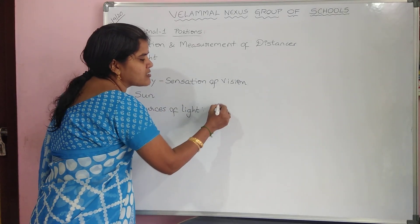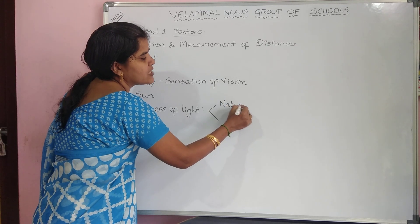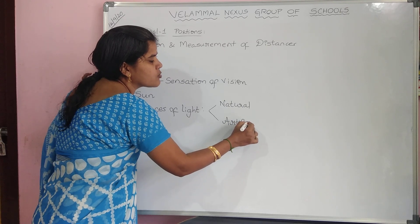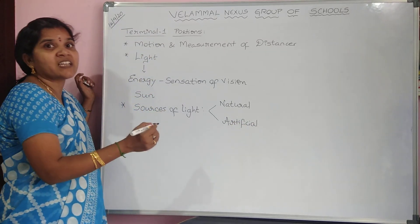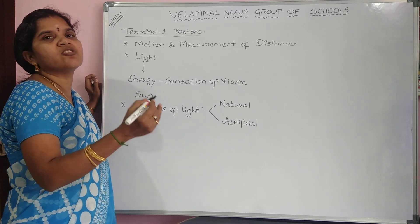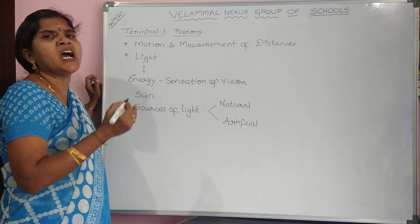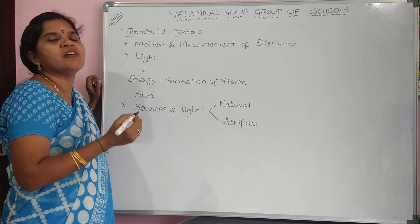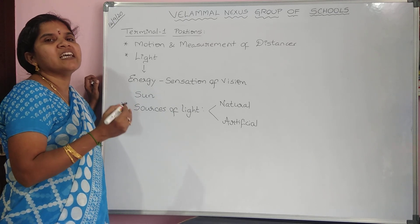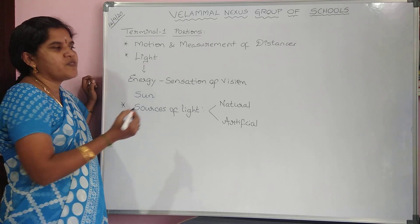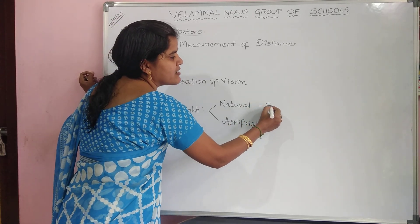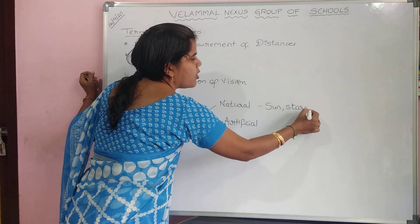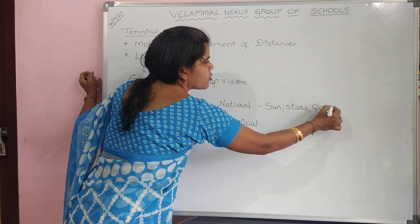We have natural sources and artificial sources of light. Natural sources are substances which can give light on their own. Artificial means man-made — sources of light which are made by man and give out light. Examples of natural sources: sun, stars, glow worms, etc.